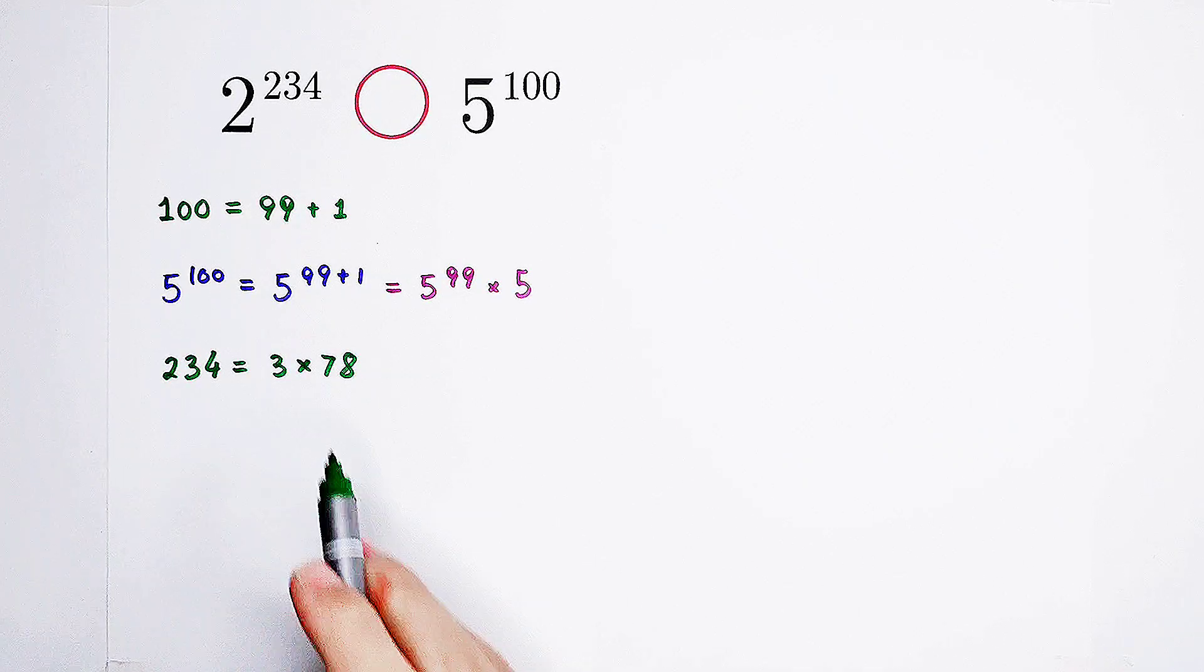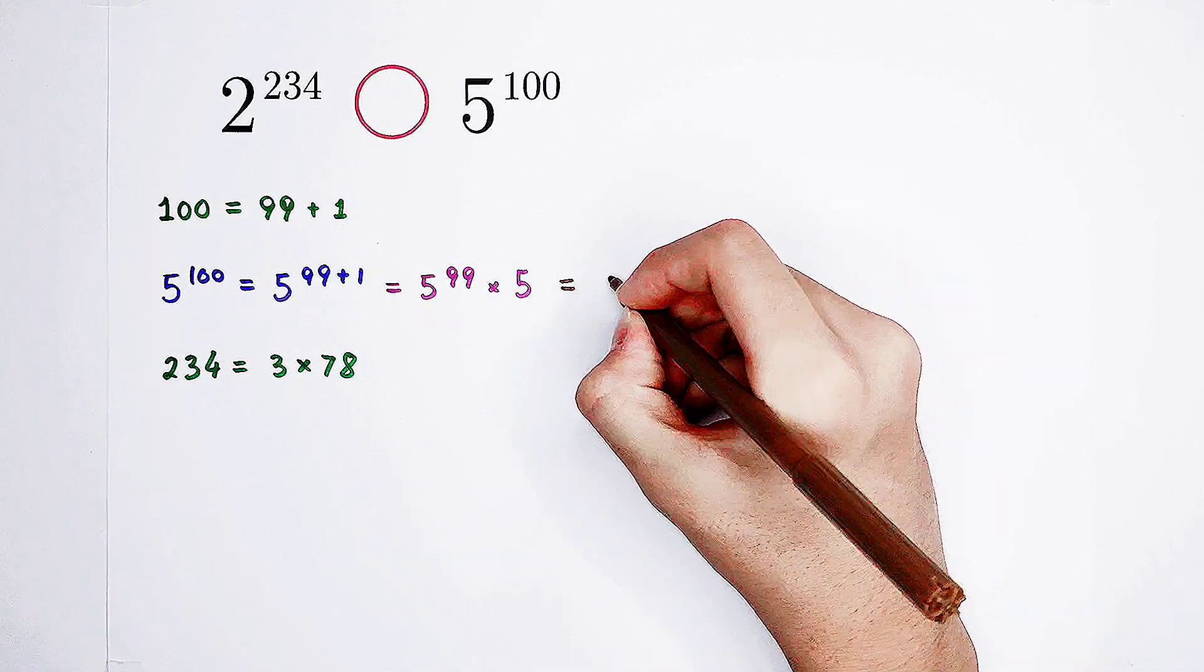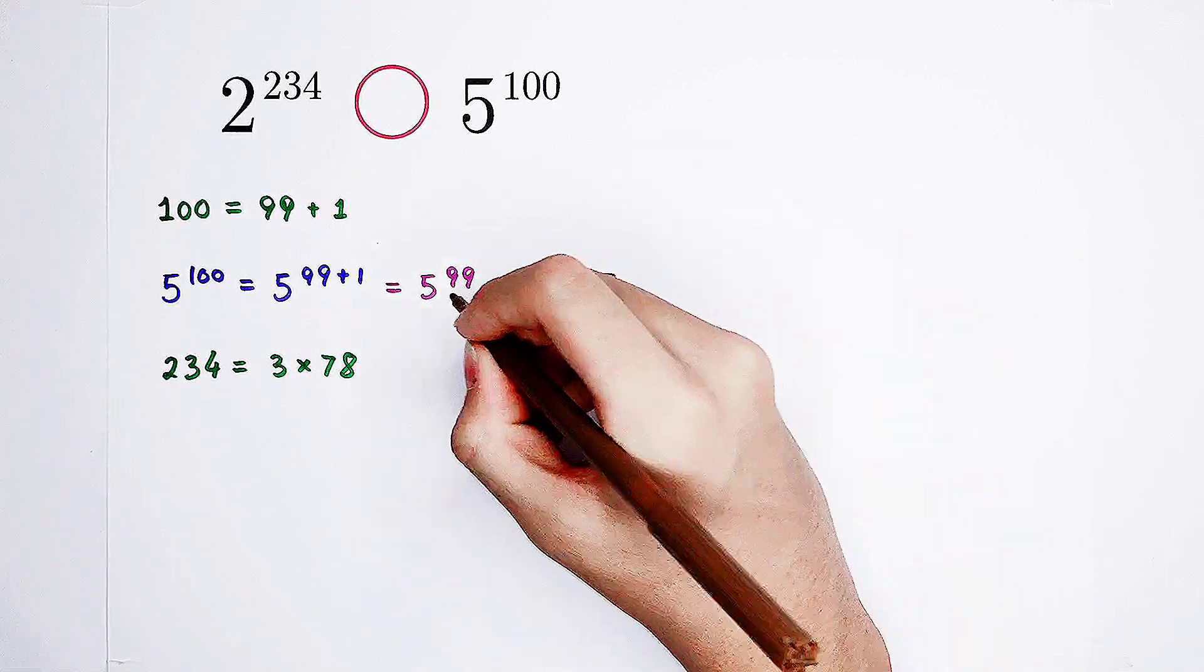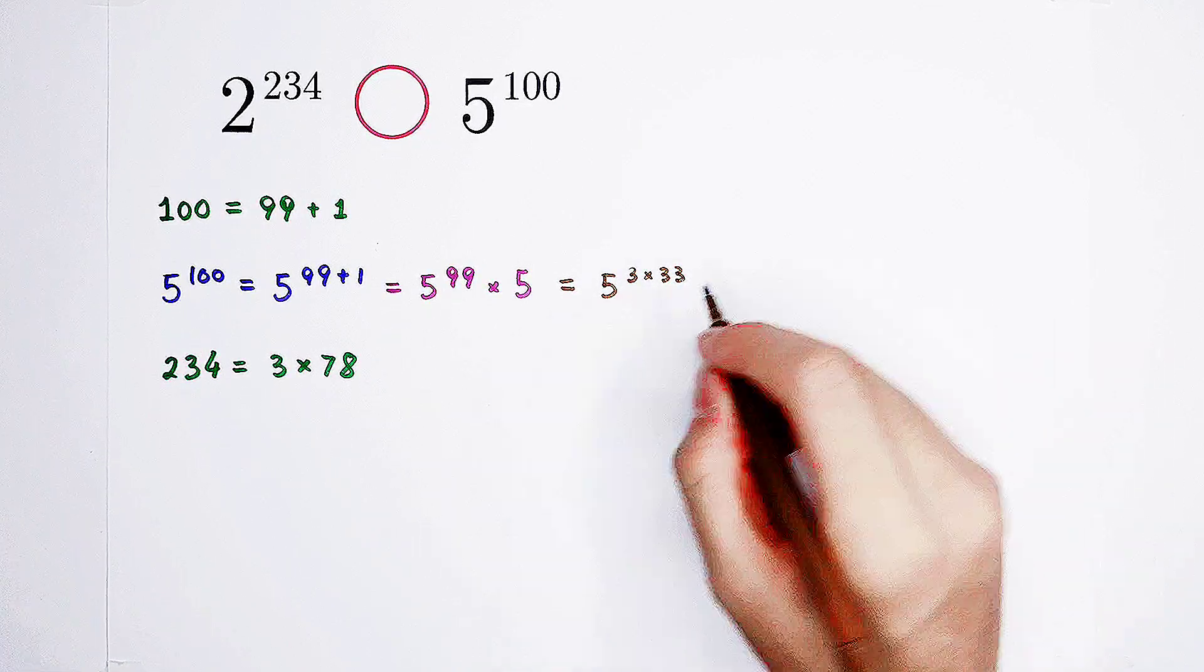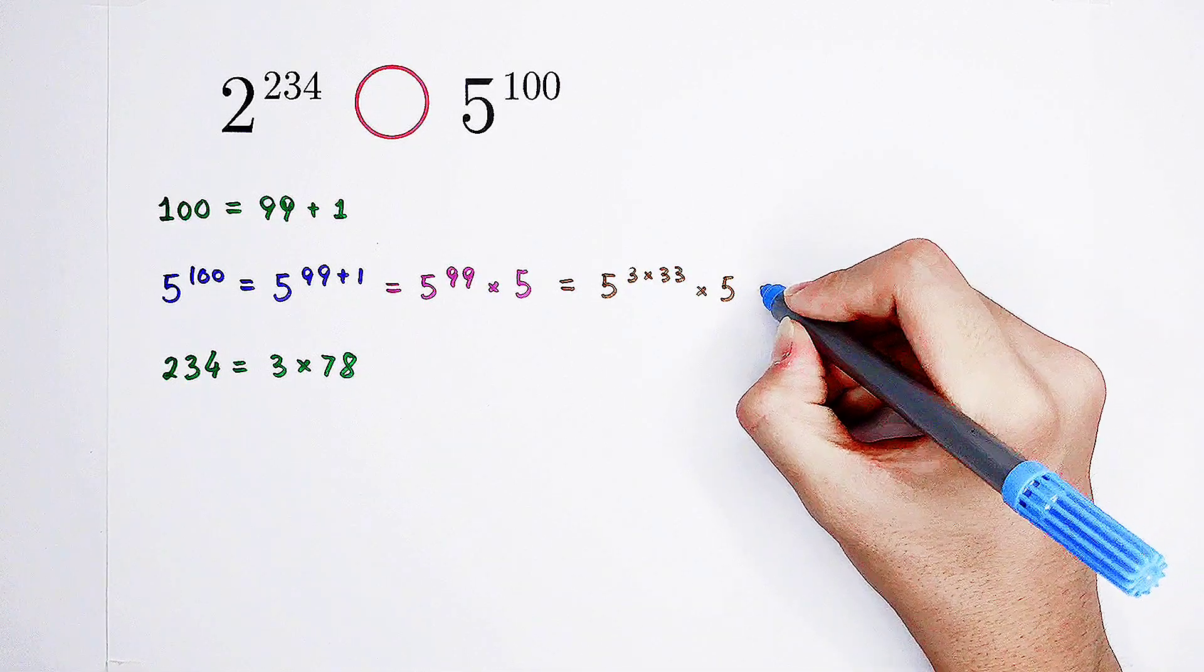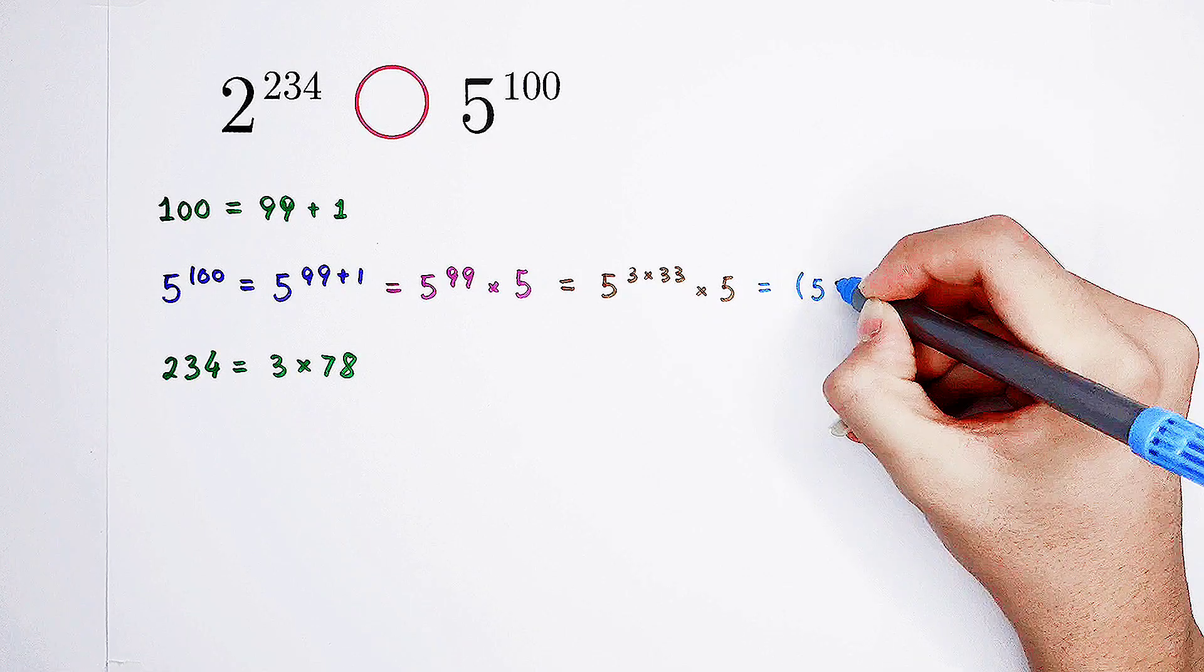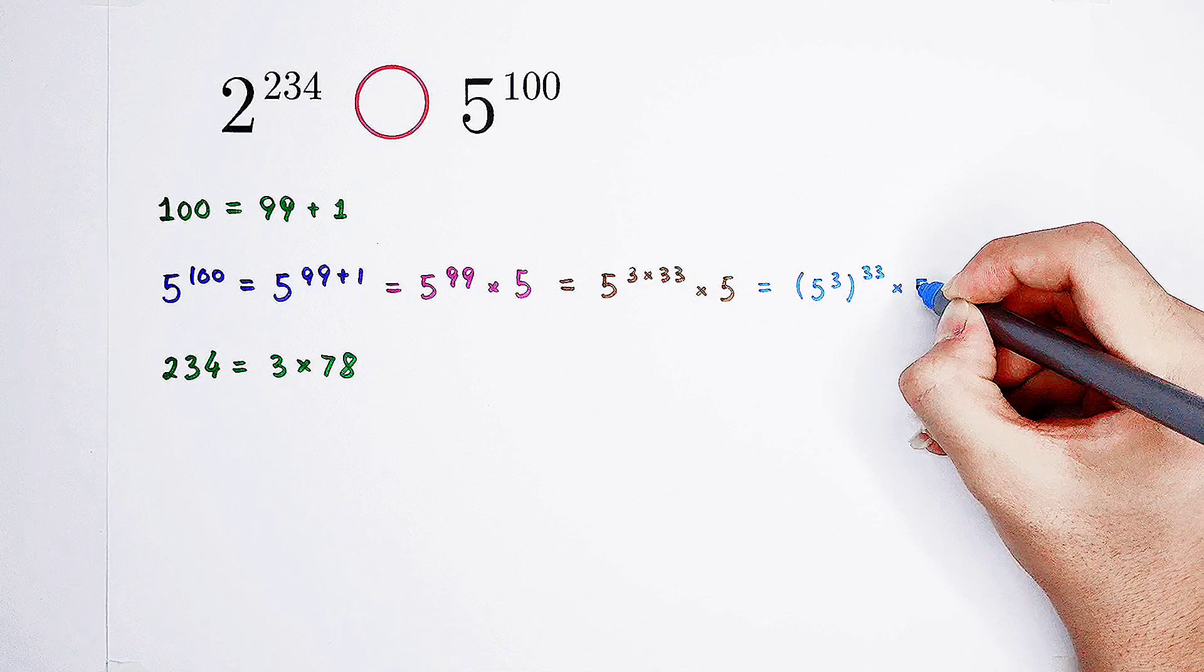It is actually 3 times 78. Actually, go back to this term. 5 to the power of 99. 99 is not only a multiple of 3, but a multiple of 9 as well. Actually, 11 also. So now, it can be written as 5 to the power of 3 times 33. So now, our 5 to the power of 99, it can be written as 5 to the power of 3, all to the power of 33, and then times 5.